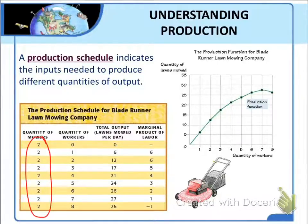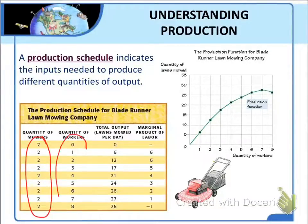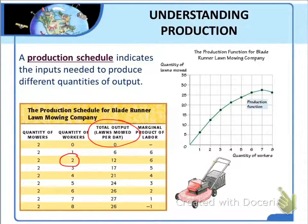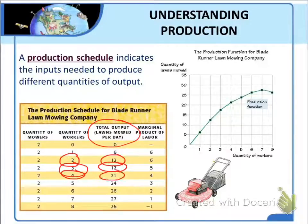We are looking at Blade Runner's production options in the short run, which in this case is several weeks — the amount of time it would take to acquire more mowers or sell existing ones. Labor, however, is a variable input; Blade Runner can quickly increase or decrease the quantity of workers it employs. Total output is measured by the quantity of lawns mowed per day. With two employees, Blade Runner can mow 12 lawns each day. With three workers, 17 lawns. With four workers, 21 lawns, and so on.